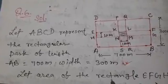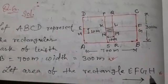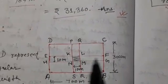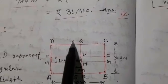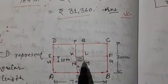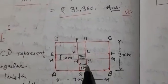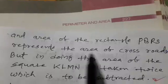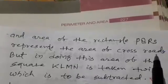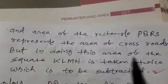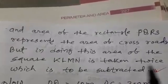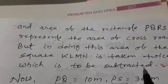Let rectangle EFGH represent one road and the other road is PQRS. Both have the same width 10 meter. The area of rectangles PQRS and EFGH represent the area of crossroads. But in doing this, area of the square KLMN is taken twice which is to be subtracted.